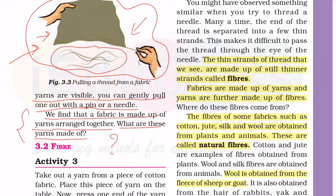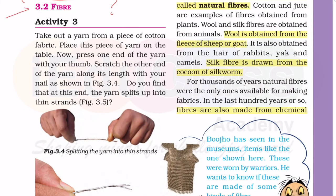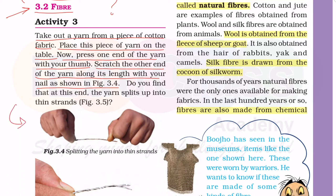Let's read and find out about these yarns. Activity 3.2 - Fiber. Take out a yarn from a piece of cotton fabric and place it on the table. एक कपड़ा निकालो cotton का, थोड़ा सा उसको टेबल पे रखो, उसमें से yarn निकालो। Now press one end of the yarn with your thumb and scratch the other end along its length with your nail, as shown in figure 3.4.